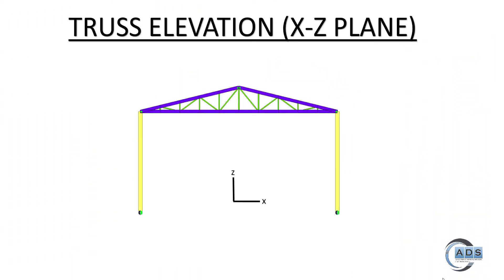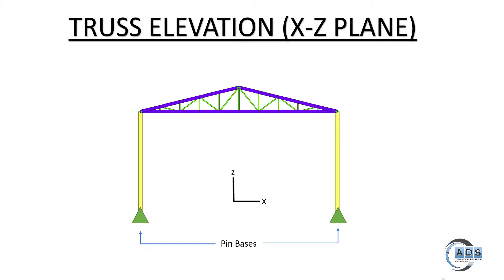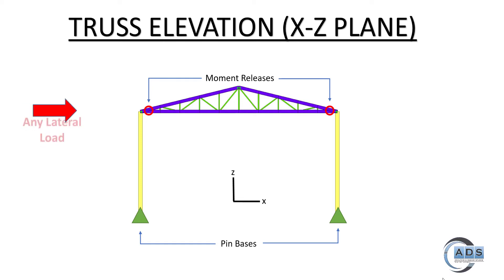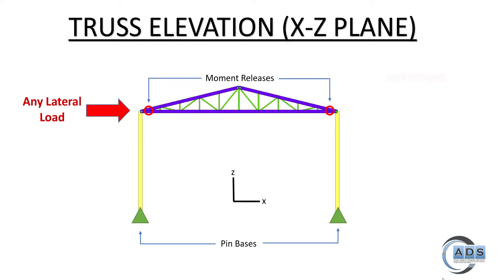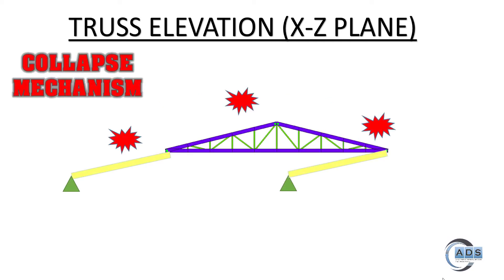This is the truss elevation in the XZ plane that we have modeled, which has pin supports at the bottom, and the points at which the truss is connected to the columns are having moment releases. We are analyzing this structure for gravity loads, but lateral load may hit the structure, or even self-weight induces some eccentricities which may lead to structural collapse. This is what we call the collapse mechanism.